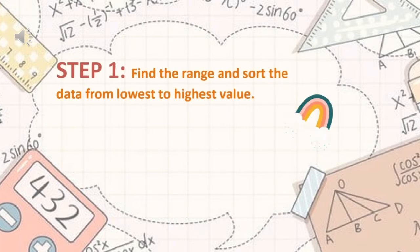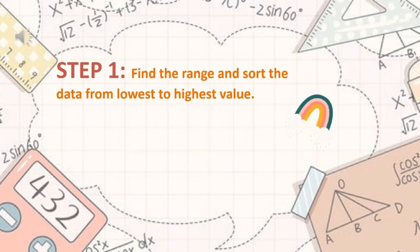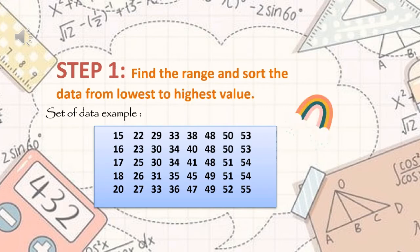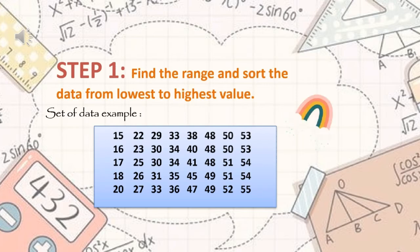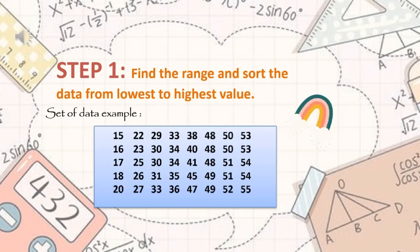Here is the first step: find the range from lowest to highest. As you can see, the lowest data is 15 and the highest is 55. The reason why we need to arrange the given data set is to convert it into array form. So the arrangement would be 15, 16, 18, 20, and so on and so forth.